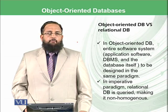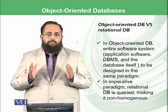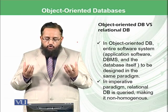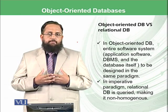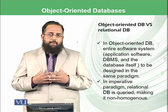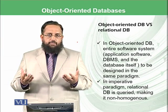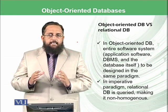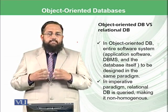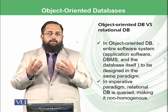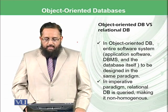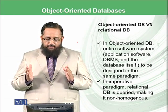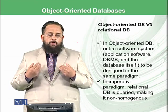If we compare the object-oriented database versus the relational database model: in the object-oriented database model, the entire software system — application software, the DBMS, and the database itself — is designed in the same paradigm. At the lower level, links are managed using objects and linked lists or similar structures. The database storage is based on objects, and you access the database at the application layer using object-oriented programming languages like Java or C++. In the imperative paradigm, it was very difficult when a relational database was queried using an imperative paradigm based on the functional paradigm.